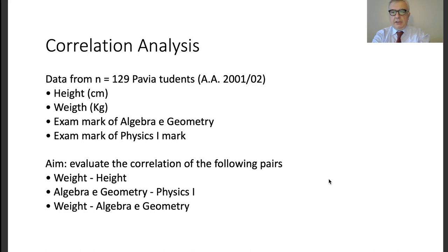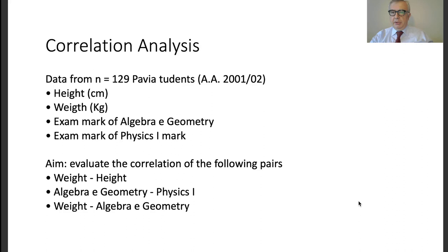In particular, we are going to study the correlation between weight and height; the correlation between algebra and geometry versus physics; and the correlation of weight versus algebra and geometry. The first two pairs are quite obvious, but the third one is quite odd. Why are we investigating a possible correlation between weight and the marks students got in algebra and geometry? We will see that something interesting is going to happen when we look at this data.